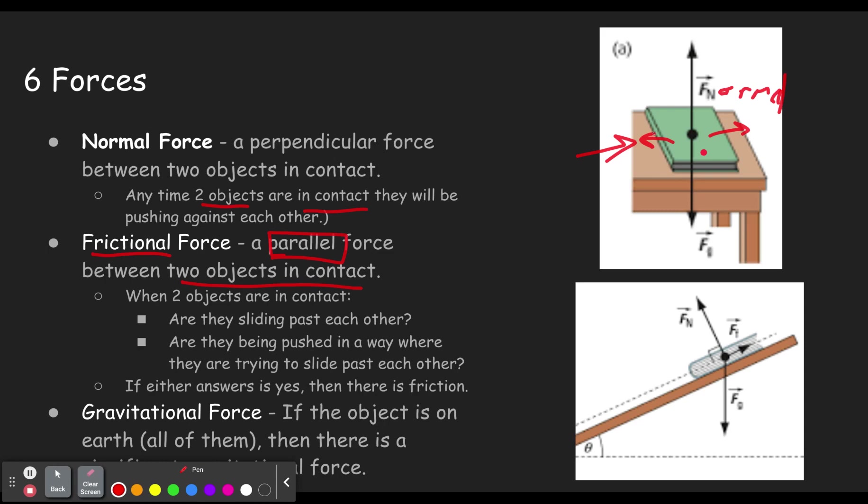Friction is the little bumps on the bottom of the book interacting with the little bumps on the table as they would slide back and forth. But if it's just resting there, there's no sideways frictional force. However, down here in the bottom one, we see that gravity is trying to pull it down the slope. And so there is a frictional force.